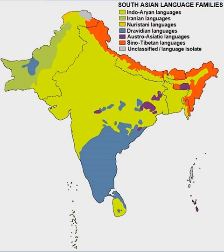Sino-Tibetan languages are spoken in the Western Himalayas and in the highlands of northeast India. The Sino-Tibetan family includes such languages as Meitei, Bodo, Naga, and Garo. Some of the languages traditionally included in Sino-Tibetan may actually be language isolates or part of small independent language families.